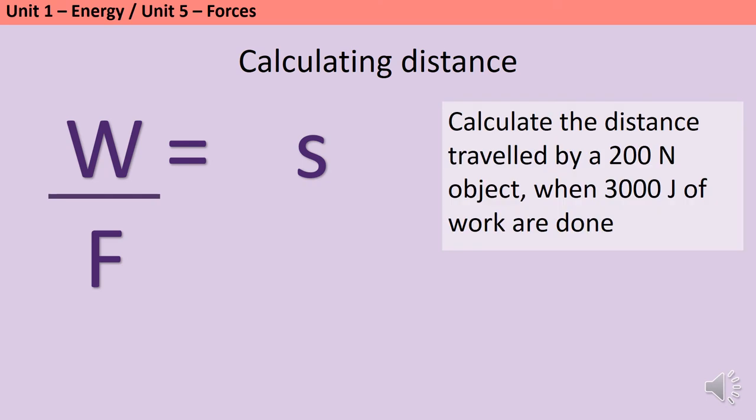So in this question, we're asked to calculate the distance travelled by a 200 newton object when 3,000 joules of work are done. So distance is going to be work done divided by force, so 3,000 divided by 200, which gives me an answer of 15 meters, because of course distance is always measured in meters.